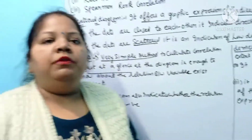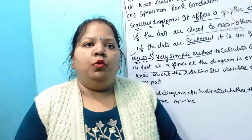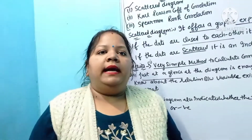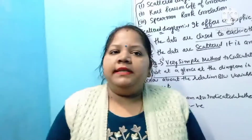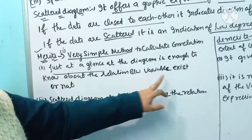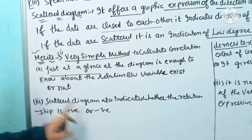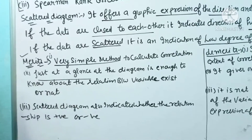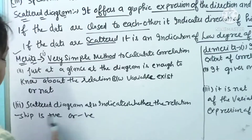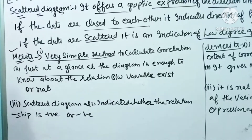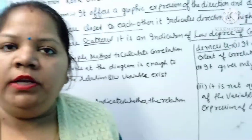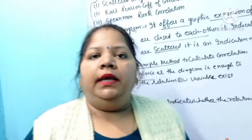Just at a glance, you will know whether there is some relationship between the two variables or not. Scatter diagram indicates whether the relationship is positive or negative. Scatter diagram is the simplest way to calculate the correlation.